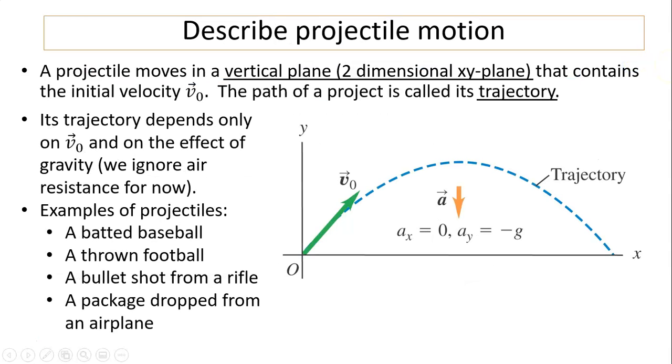Describe projectile motion. A projectile moves in a vertical plane, that's two-dimensional x-y plane, and that plane contains initial velocity v-naught. The path of projectile is called trajectory. Its trajectory depends only on the v-naught and the effect of gravity. So for now, we ignore air resistance.